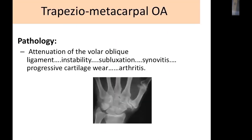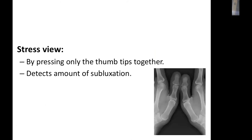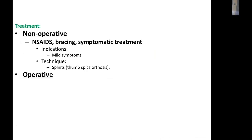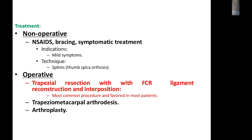Trapezio-metacarpal osteoarthritis occurs due to attritional changes in the supporting ligaments of the trapezio-metacarpal joint, causing pain at the base of the thumb and radial side of the wrist. X-ray staging follows the Eaton classification: stage 1 no changes, stage 2 minor osteophytes with joint narrowing, stage 3 osteophytes larger than 2mm, and stage 4 also affecting the STT joint. Stress views reveal subluxation. Treatment ranges from conservative management (splint, bracing, injection) to surgical trapezial resection with FCR ligament reconstruction and interposition graft. Trapezio-metacarpal arthrodesis and arthroplasty are also options.